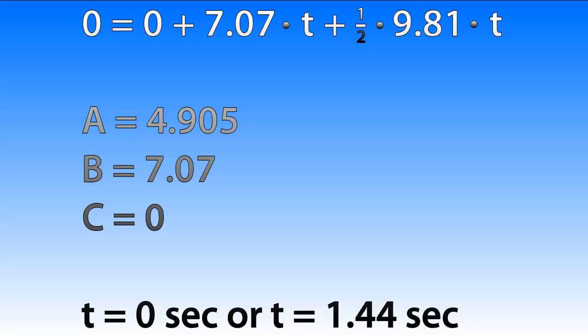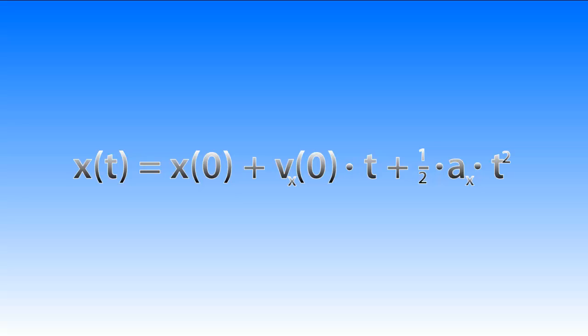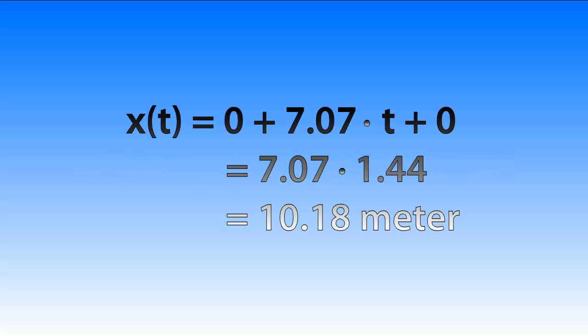So we are taking t is 1.44 seconds as our time of flight and inserting this into the x equation. So that means that if we just fill it in, xt becomes 7.07 times 1.44 is 10.18 meters. And that is the answer to our question. Hope you learned something today and I will see you next time.